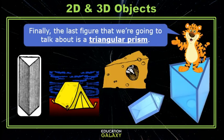Finally, the last figure we're going to talk about is a triangular prism. Just like a rectangular prism, the sides of triangular prisms are rectangles. The difference is the bases — the top and the bottom — are triangles. Just like with a rectangular prism, though, these triangles are the same size and they're parallel.